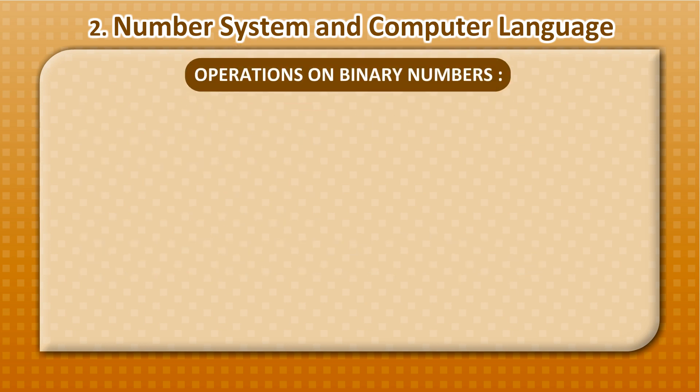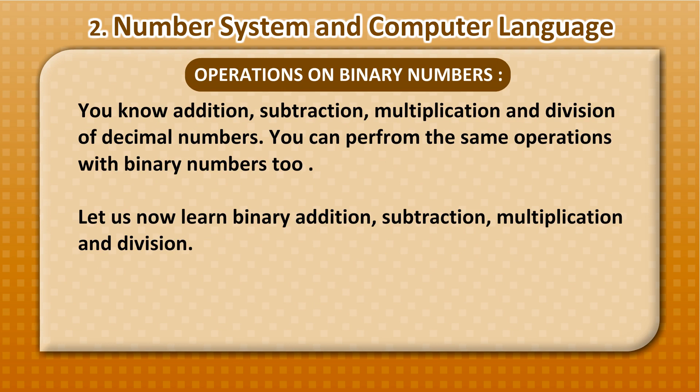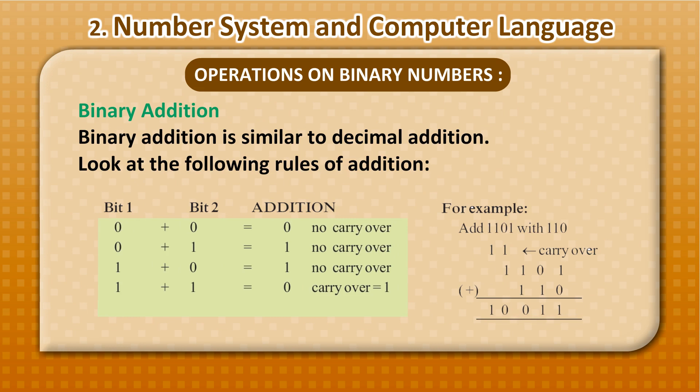Operations on binary numbers: You know addition, subtraction, multiplication and division of decimal numbers. You can perform the same operations with binary numbers too. Let us now learn binary addition, subtraction, multiplication and division. Binary addition is similar to decimal addition. Look at the following rules of addition: 0 plus 0 equals 0, no carryover. 0 plus 1 equals 1, no carryover. 1 plus 0 equals 1, no carryover. 1 plus 1 equals 0, carryover 1.